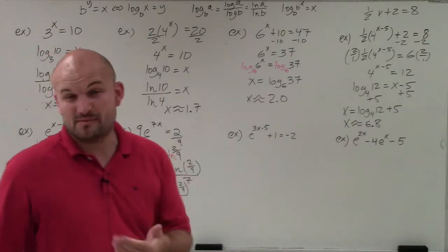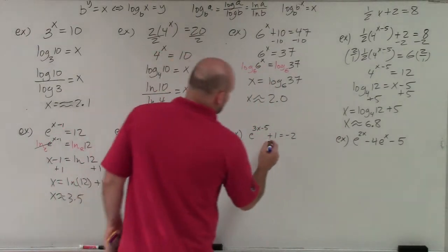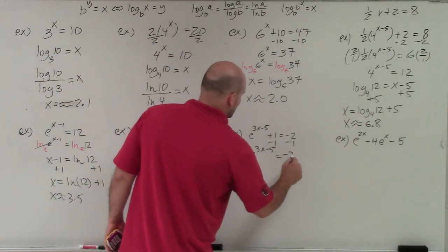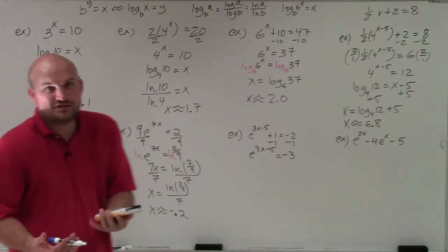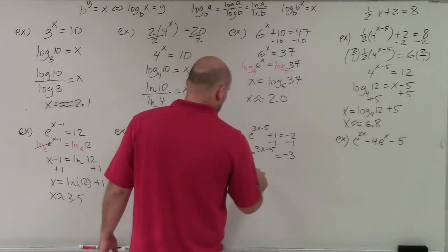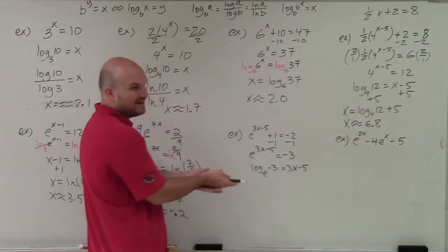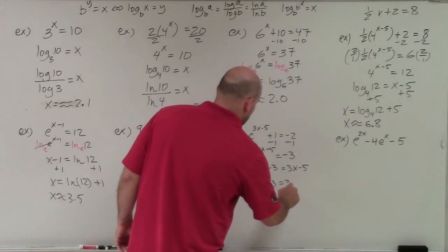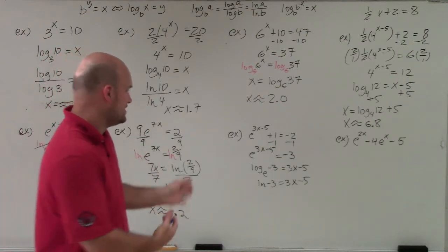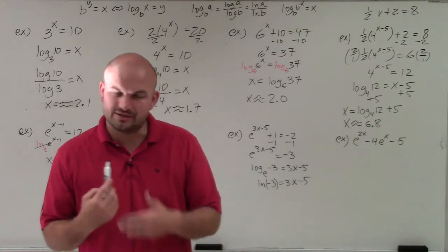The next one has a more complex power, but the main important thing is still just isolating the exponent. Subtracting 1 on both sides — since that 1 is not in the power — gives e to the (3x minus 5) equals negative 3. Taking ln of both sides, or converting to logarithmic form, gives log base e of negative 3 equals 3x minus 5. But log base e is ln, so it's ln of negative 3 equals 3x minus 5. This is the same result you'd get by taking ln of both sides directly.